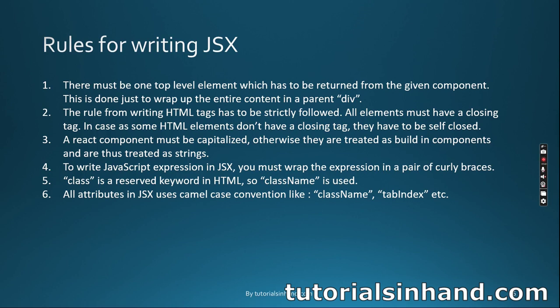Rule two: the rules for writing HTML tags must be strictly followed — all elements must have a closing tag. Tags like h1 and h2 have an opening and closing tag. For elements like img that don't have a closing tag in HTML, they must be self-closed in JSX. This is one of the key thumb rules for writing good JSX.